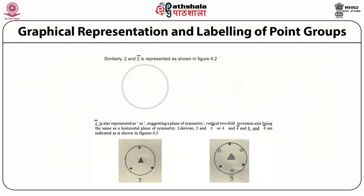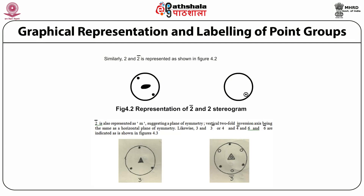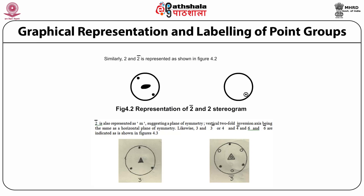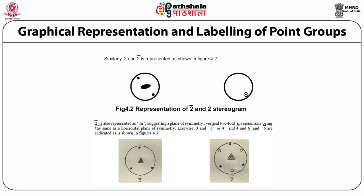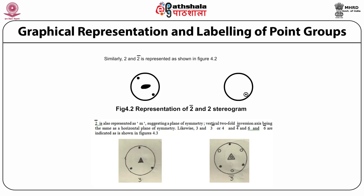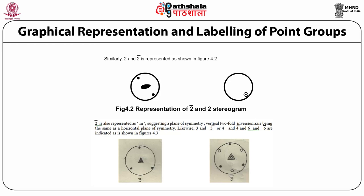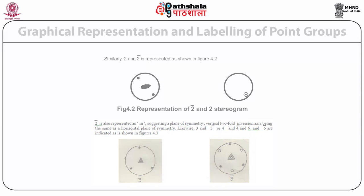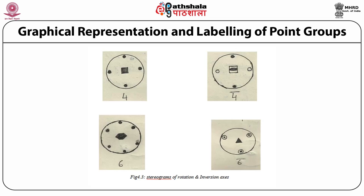Similarly, 2 and 2-bar are represented as shown in Figure 4.2, which shows their representation on the stereogram. 2-bar is also represented as small m, which suggests a plane of symmetry — the vertical two-fold inversion axis being the same as a horizontal plane of symmetry. Likewise, 3 and 3-bar, 4 and 4-bar, and 6 and 6-bar are indicated as shown in Figure 4.3, which shows stereograms of rotation and inversion axes.